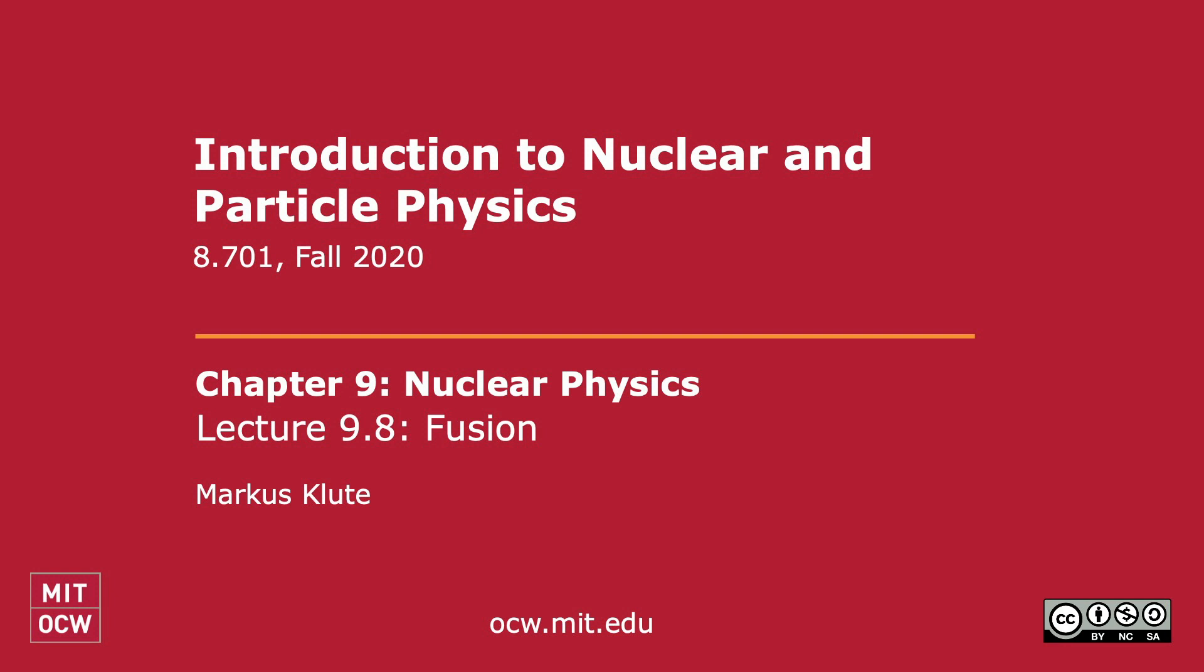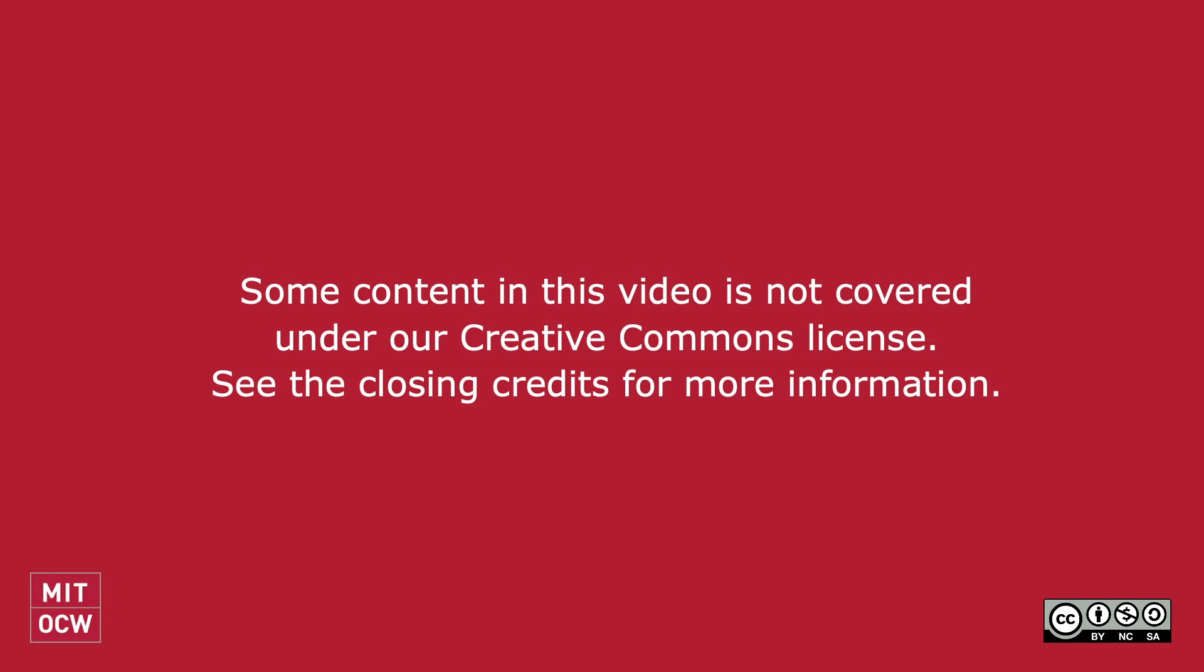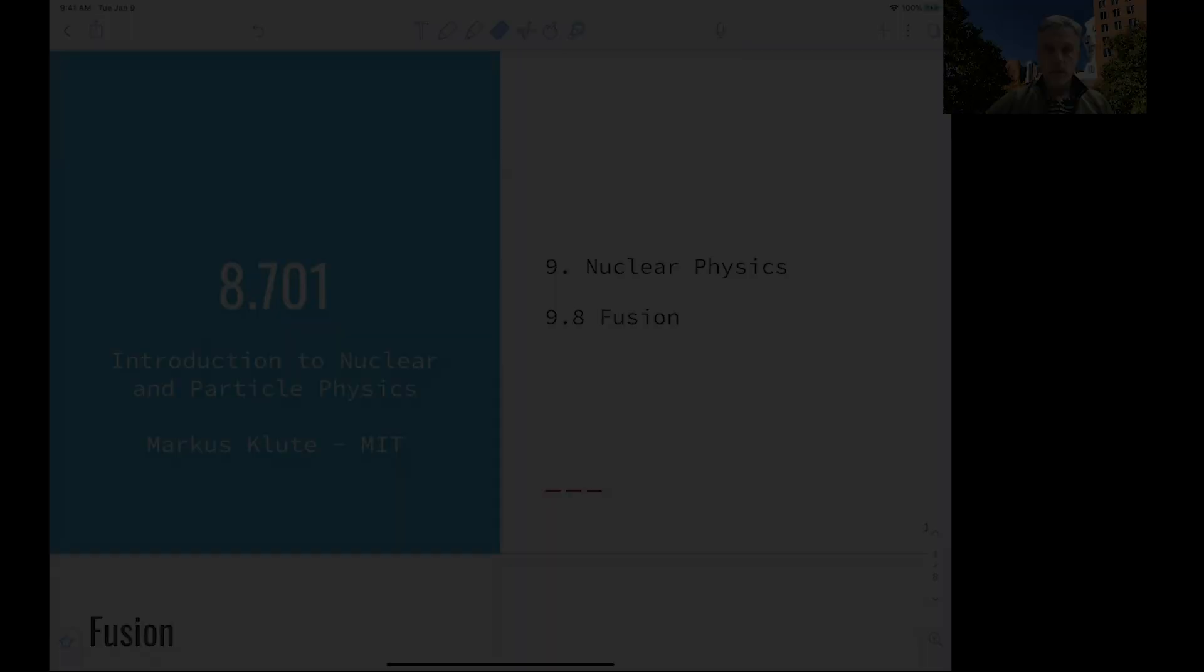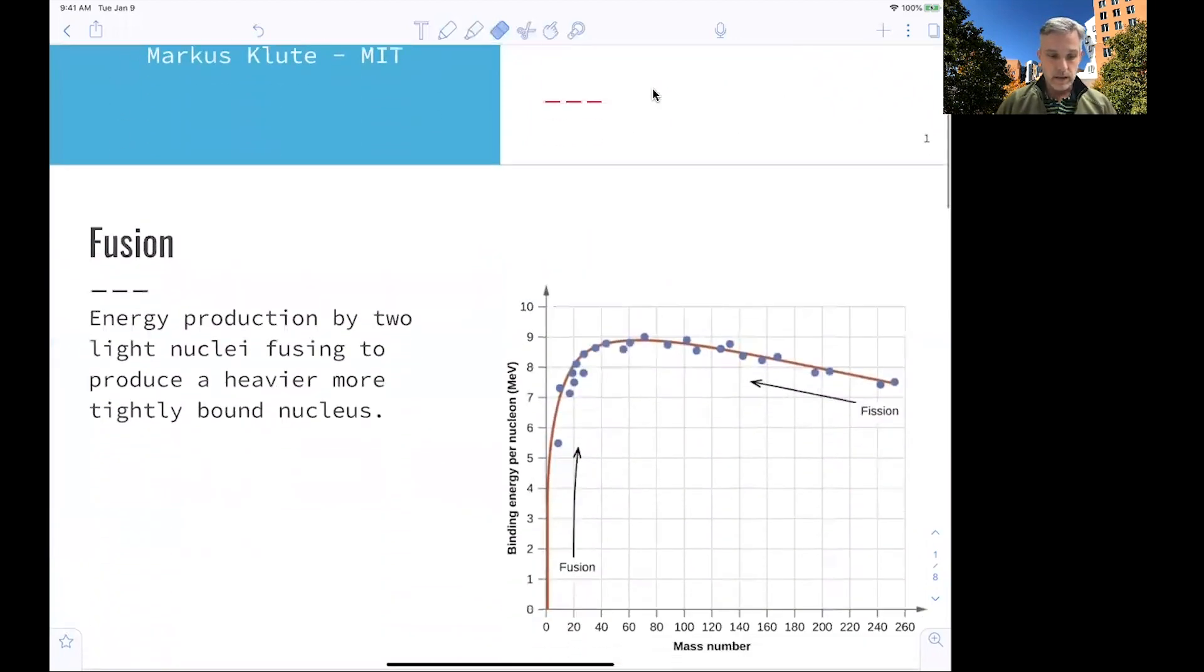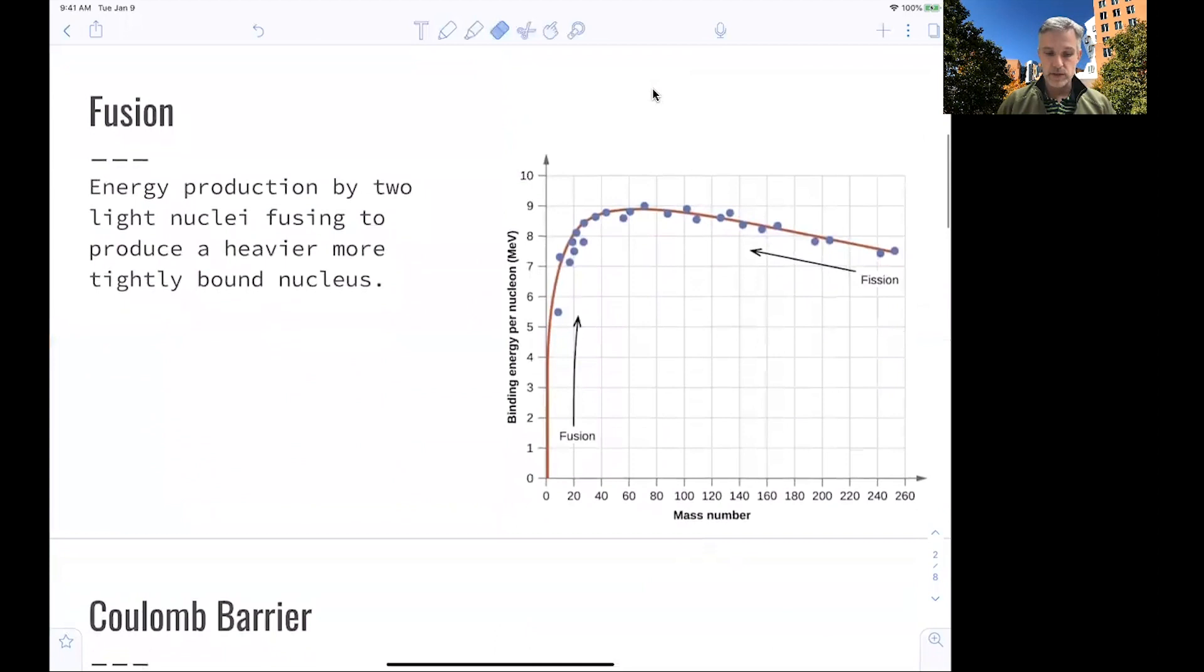Welcome back to 8701. So in this lecture, we talk about nuclear fusion. What we mean by fusion is the energy production by two light nuclei fusing together to produce a heavier one, which is more tightly bound. And again, we can understand this from the empirical mass formula.